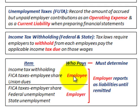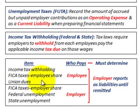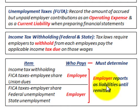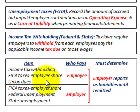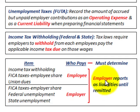The employer takes money out of the employee's check and sets it aside for any taxes the employee has to pay, or other items like hospital insurance or union dues. The employer also has their own contributions. In either case, the employer reports these as liabilities on their balance sheet until remitted to the appropriate authority — whether that's federal, state, or the union office.